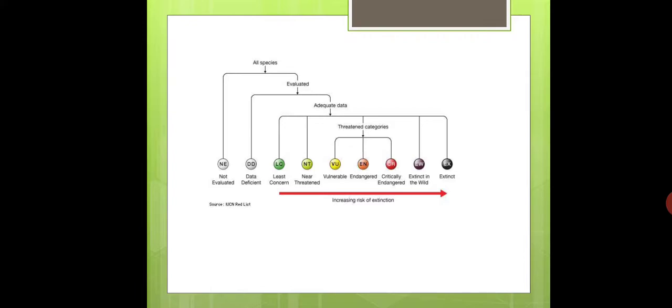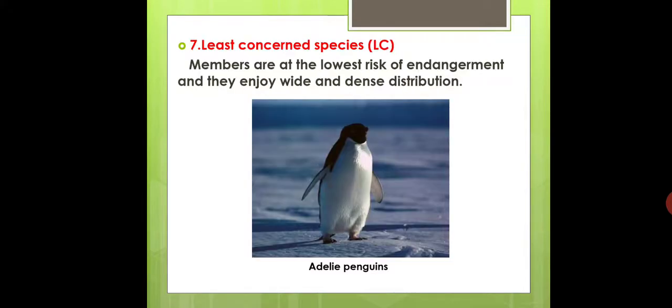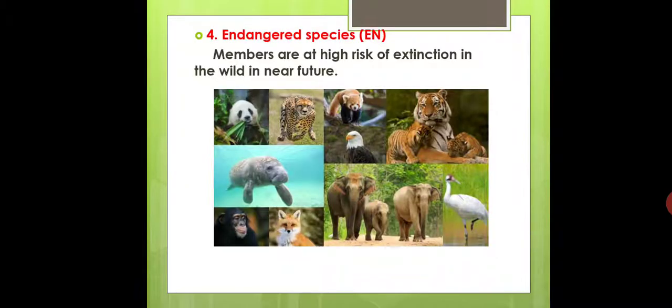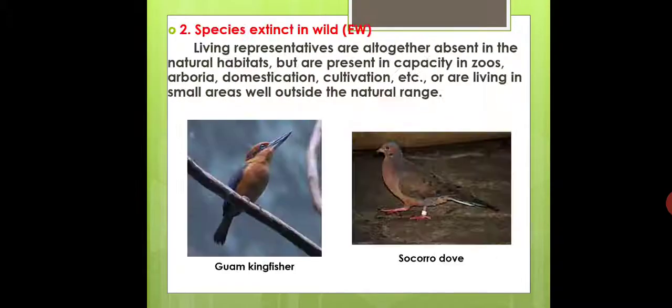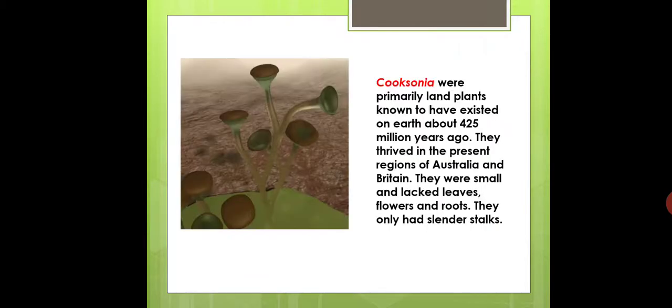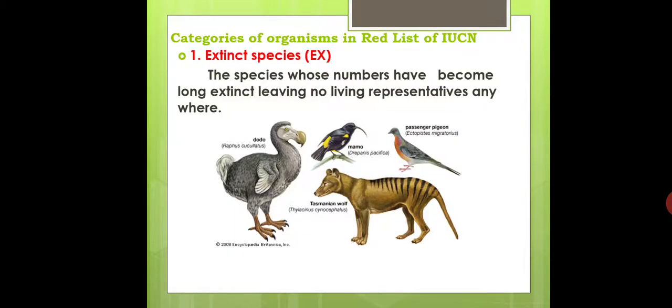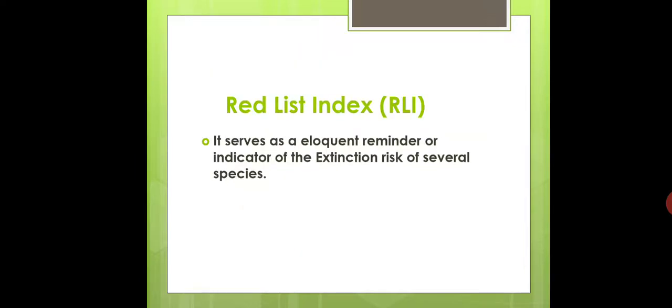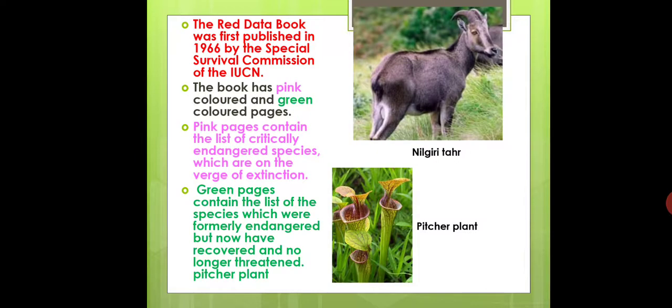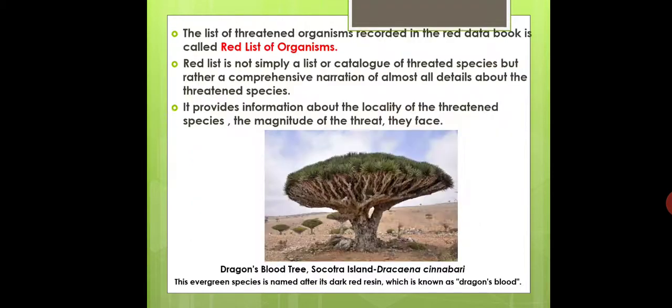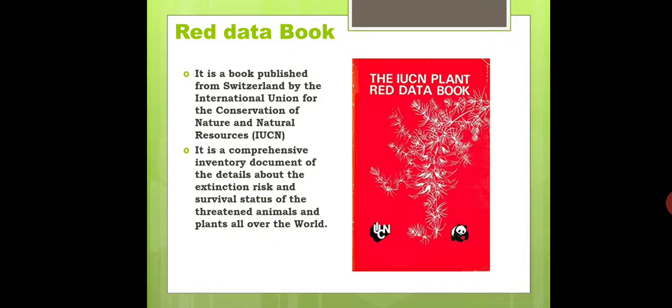Let's look at the key questions. We need to look at two-mark and one-mark questions. Important questions include: What is the Red List Index? What are the abbreviations? What is the Red Data Book? What is its purpose?